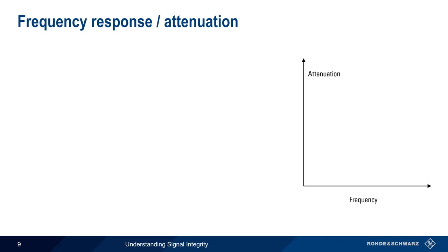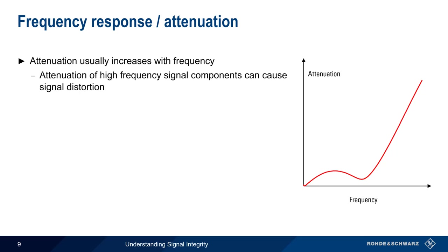Signals may also be distorted due to frequency-specific attenuation. Remember that attenuation or loss usually increases as frequency increases. If the loss were uniform for all frequency components, the received signal shape would remain the same. But when only the higher frequency components are attenuated, this can cause distortion of the transmitted waveform as it moves through the channel.